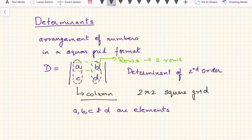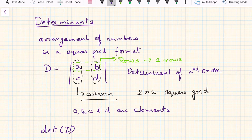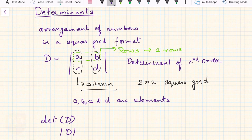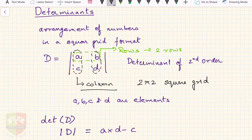Now, what is the value of this determinant D? The value is written as det(D) within brackets, or also expressed as |D| with two bars — just like absolute value notation. These are the two ways you can express the value of determinant D, and the value is nothing but a×d minus c×b.